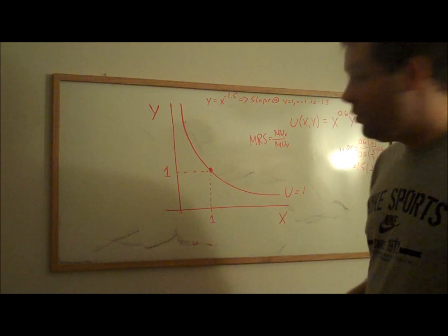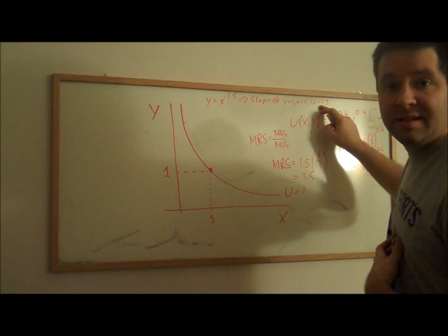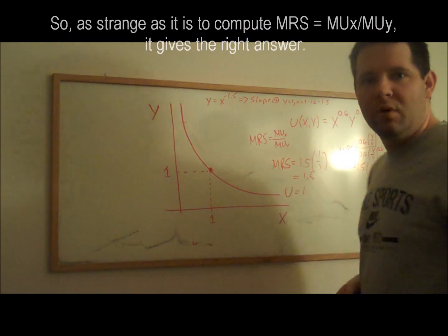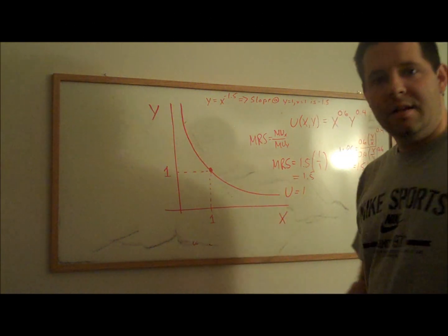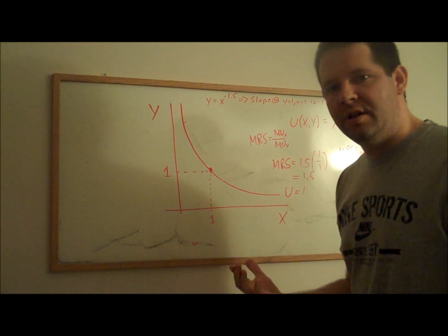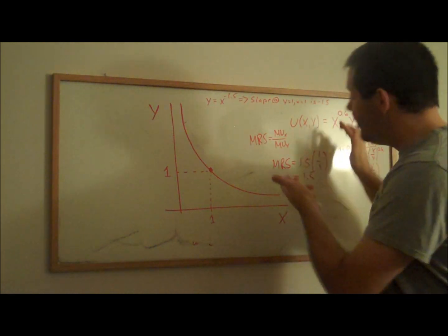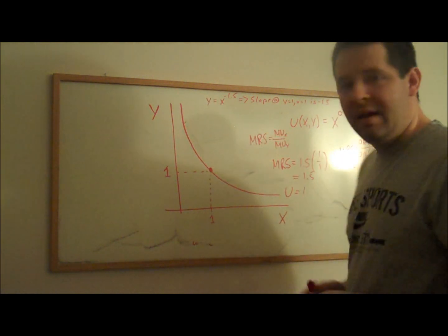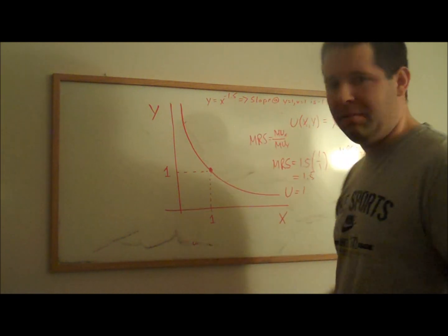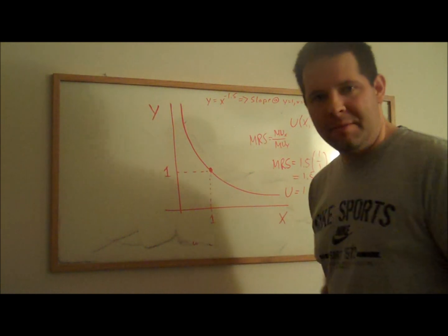If I want the marginal rate of substitution for any (x, y) bundle, I just plug into this equation. In particular, plugging in y equals 1 and x equals 1, the marginal rate of substitution is 1.5 — which is the negative of the slope we calculated directly from the indifference curve equation. You can see the equivalence between these two methods. One uses the ratio of marginal utilities to find the slope of any indifference curve in the plane; the other works only for the specific indifference curve singled out. Economics gives us this nice shortcut, and we exploit it a lot when using utility functions to analyze consumer behavior.